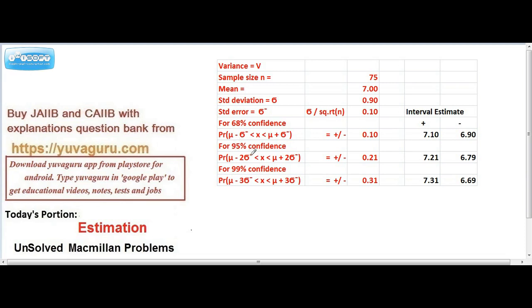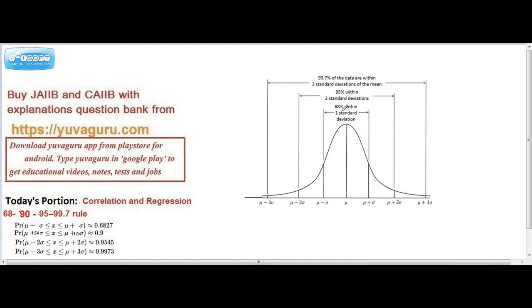This confidence level — what does it mean? There is a rule called the 68-95-99 rule. That rule says if we draw a normal distribution and take the mean as mu, then 68 percent of the area falls within one standard deviation, meaning there would be a confidence level of 68 percent within mu minus sigma to mu plus sigma.